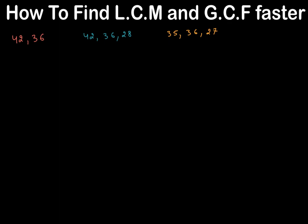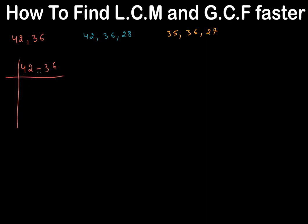So let's see how we can find LCM and GCF faster. I wrote some numbers over here. Let's work on these two numbers first — we're going to find LCM and GCF for both of them. We're going to write the numbers like this, and start with a number that goes into both of them. Both are even, so 2 will work. 2 times 21 is 42, and 2 times 18 is 36.